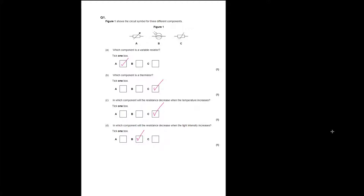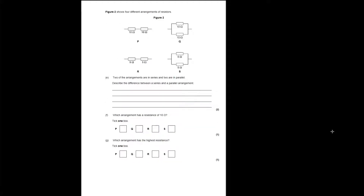We can think of the LDR — the light part being represented by these arrows. You don't always see it with a circle drawn around it. If you're asked to draw an LDR and you draw a normal resistor with just the arrows without the circle, you get the marks as well.